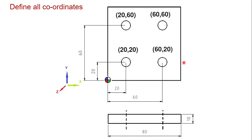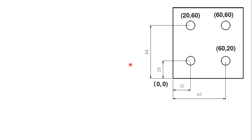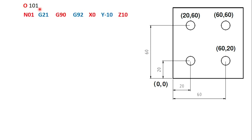Now let's start with the program. The first line is O101 — that is the name or number of the program. N00 is the first block, followed by G21, which means all inputs are in millimeters. Then G90, which is the absolute coordinate system — so if I define X60, that means 60mm from the origin, not from the current position.